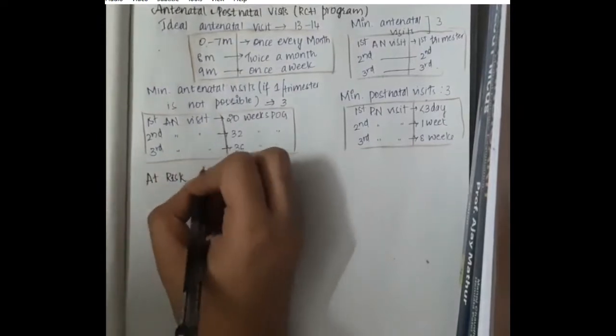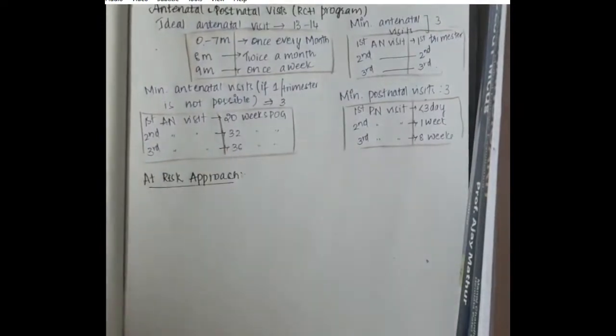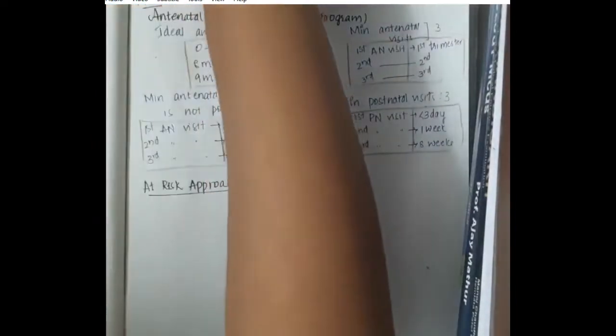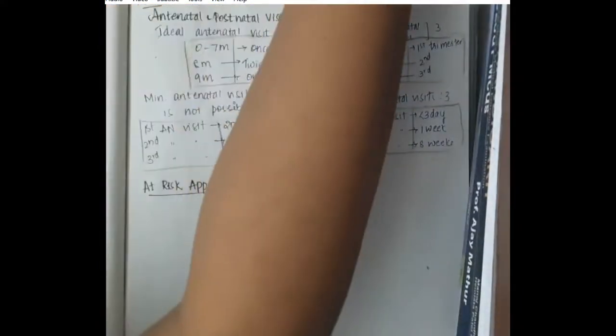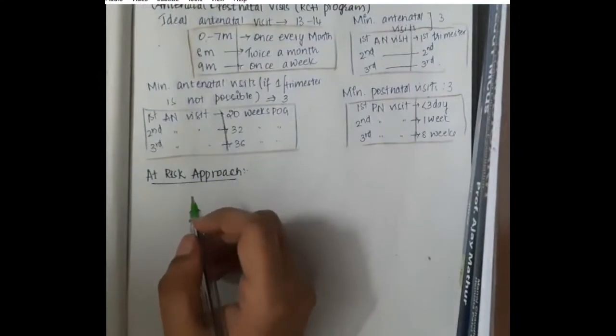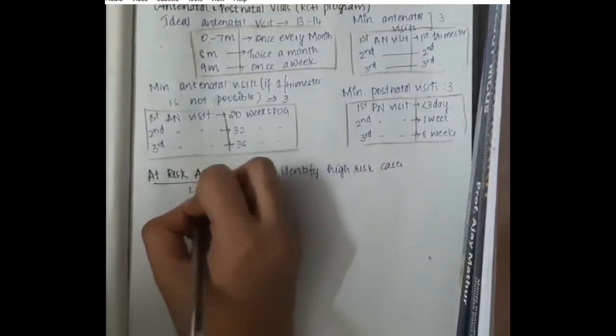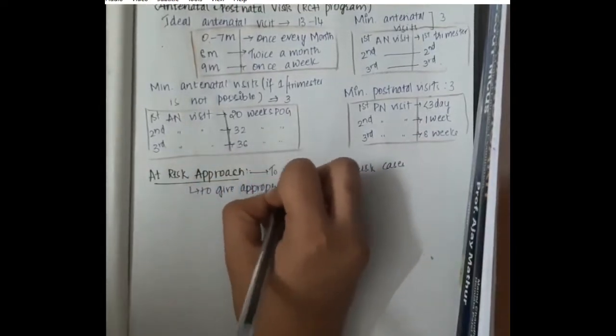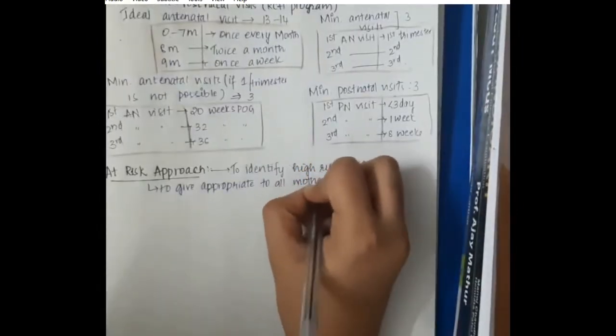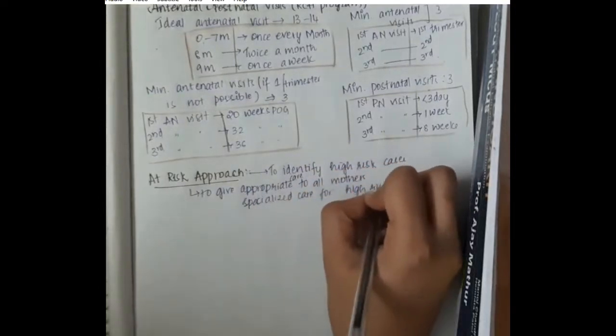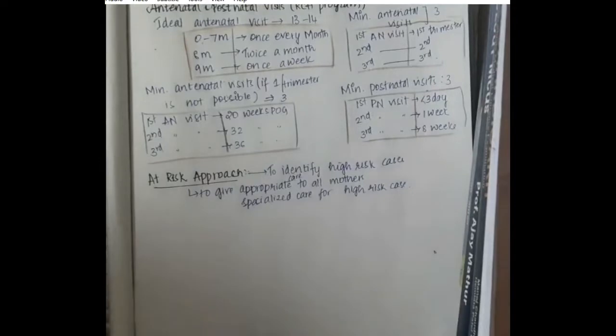Then, the at risk approach. At risk approach is done to identify high risk cases. In maternal and child health program, one main important thing is to make sure that all the mothers and children, all the mothers and babies are completely fine. They get the highest and proper amount of care. We will have to give extra care to those who are at high risk. This at risk approach is mainly to give appropriate care to all mothers and specialized care should be given to high risk cases.